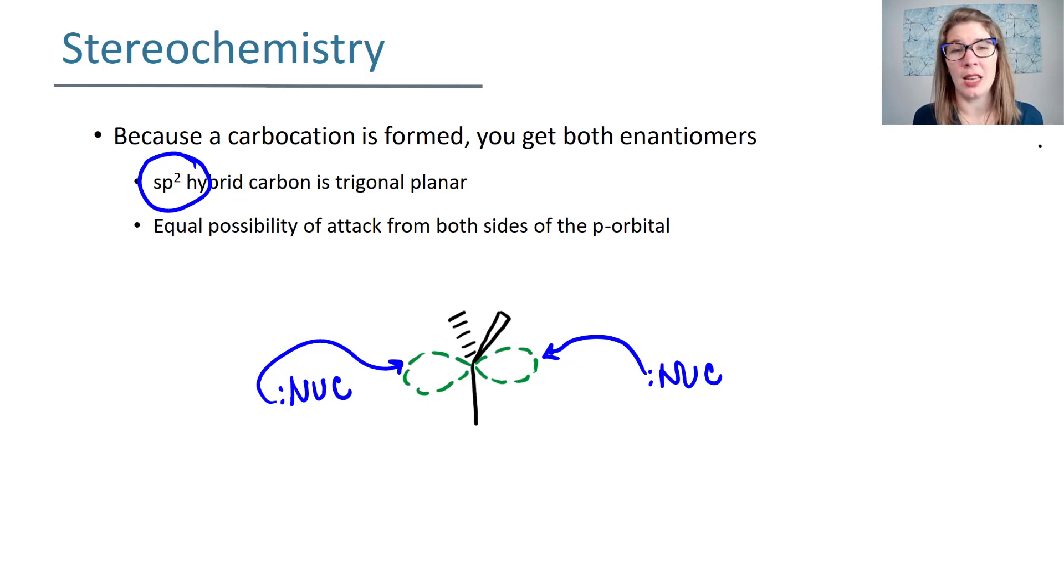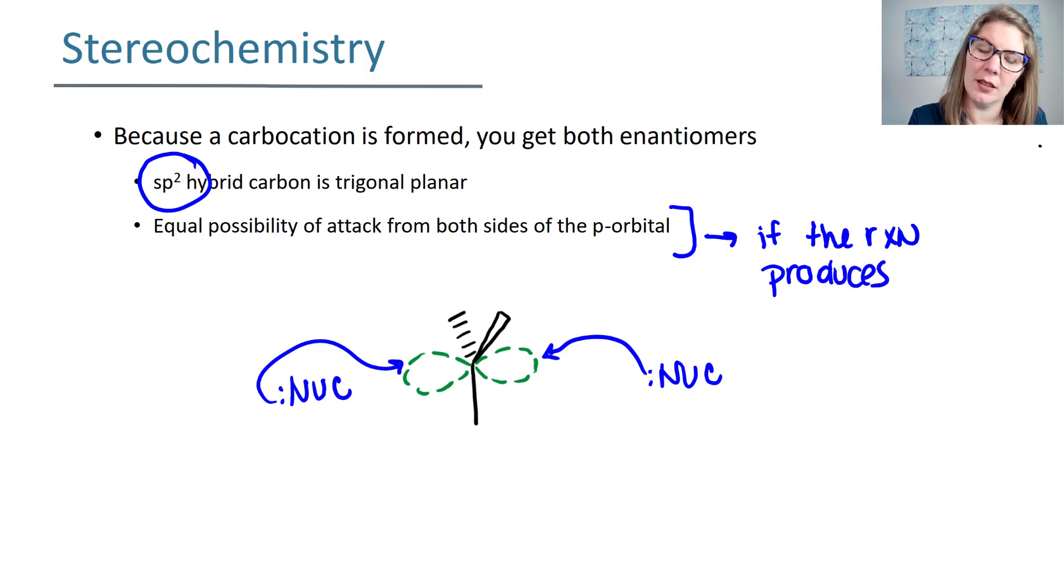Because we have equal possibility of attack from both sides of that p-orbital, this translates into a potential of both enantiomers forming. So if you have a chiral center on your product where that OH added, then you're going to get a pair of enantiomers at the end. So if the reaction produces a chiral center, you'll get both enantiomers.